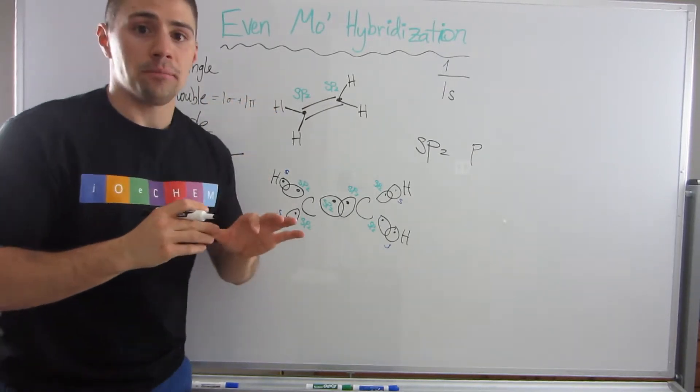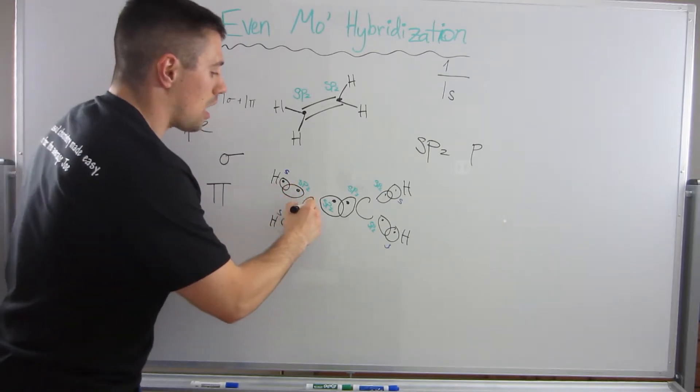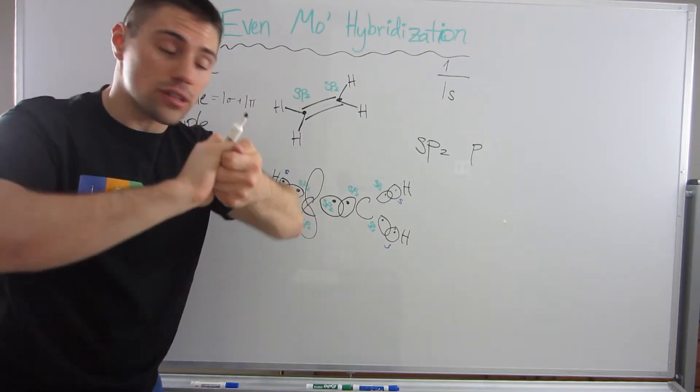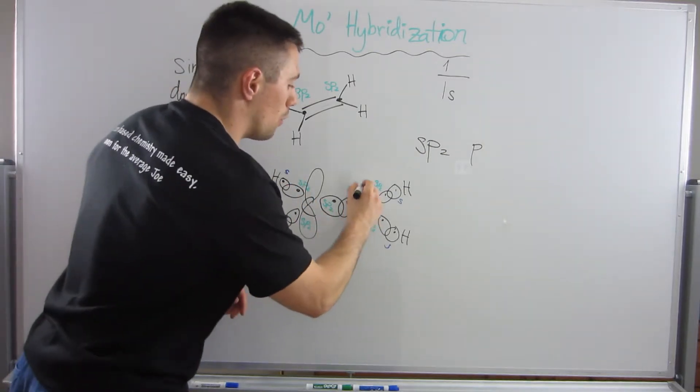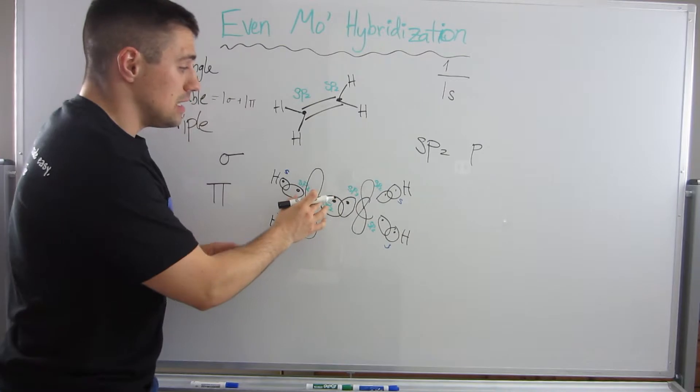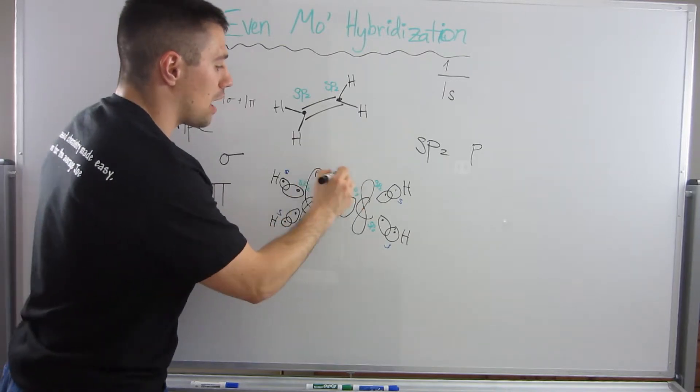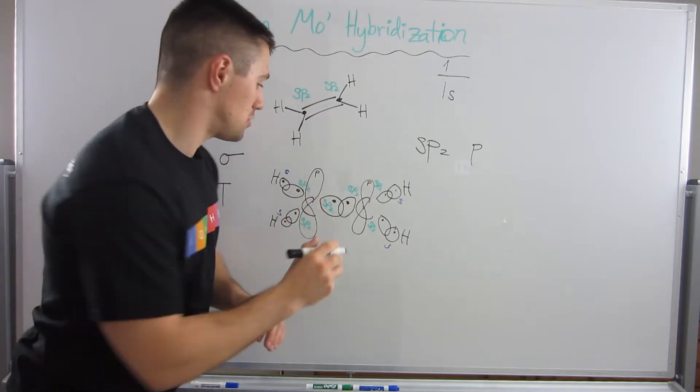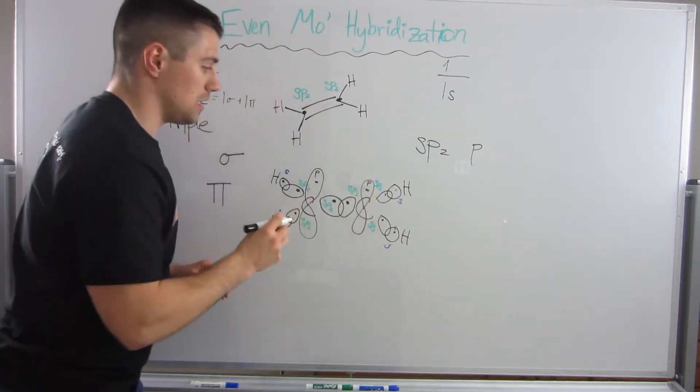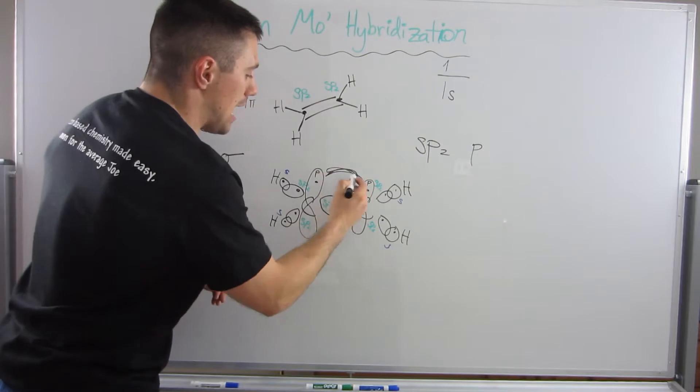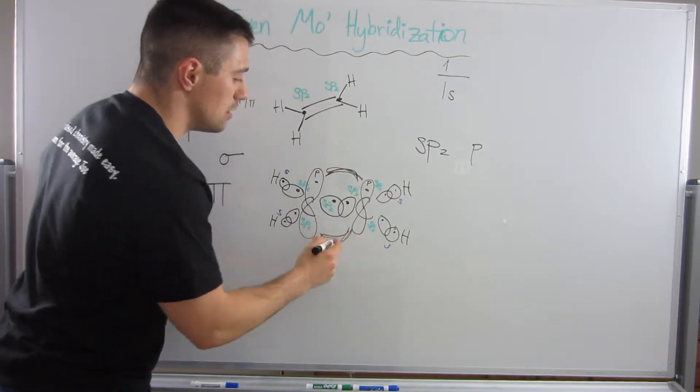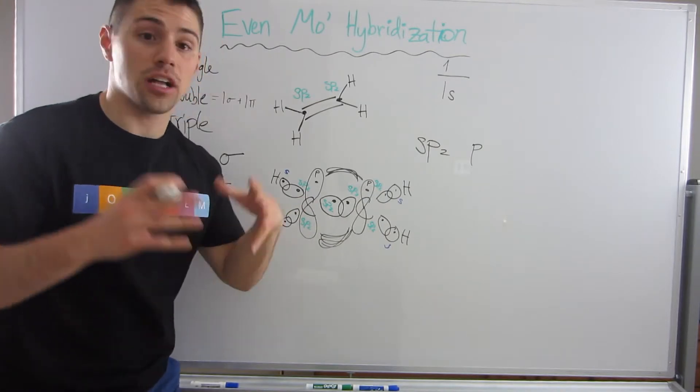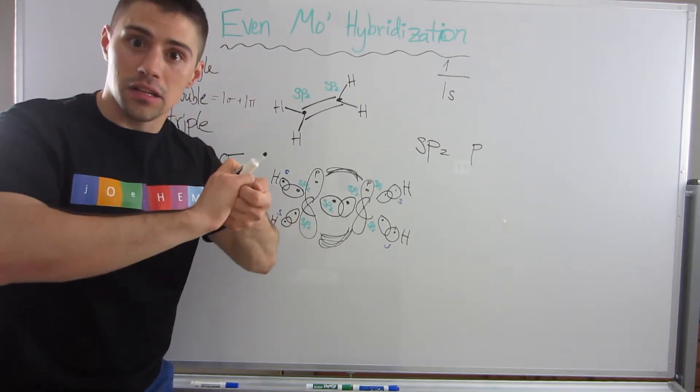Pi bonds are these loopy, big, cotton candy-like orbitals. There's no direct head-to-head overlap like the sigma bond. A pi bond is a set of unhybridized p orbitals that are parallel to each other. There's an electron in here and an electron in here, so there's this parallel interaction. It's naturally weaker than a sigma bond because they're not directly linked, just parallel.